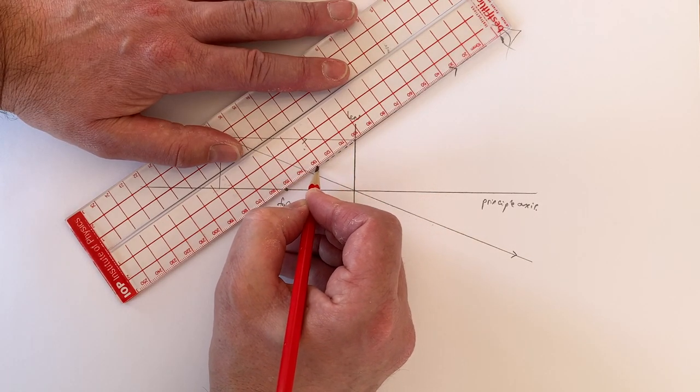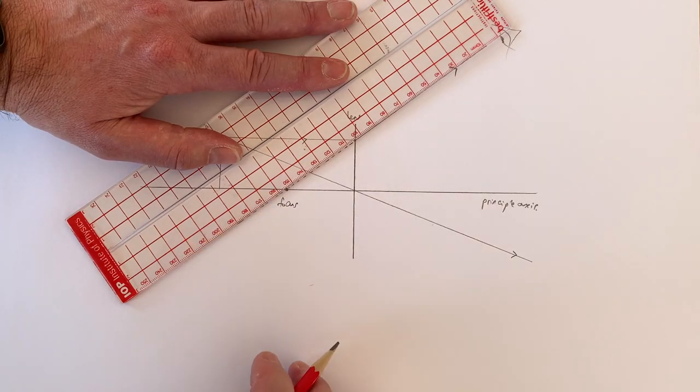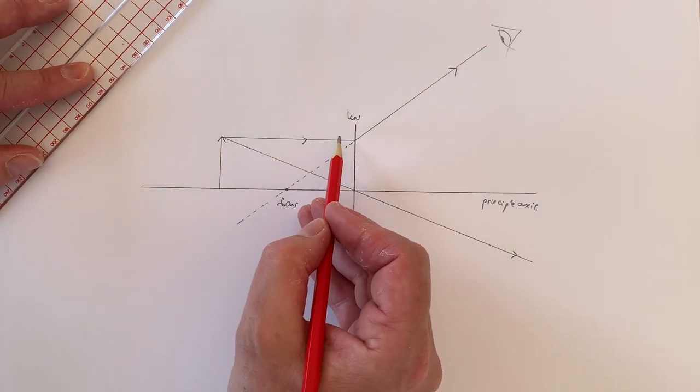This dotted line represents what I'm going to call the virtual ray, the path that it looks as though the light takes, as opposed to the light's real path.